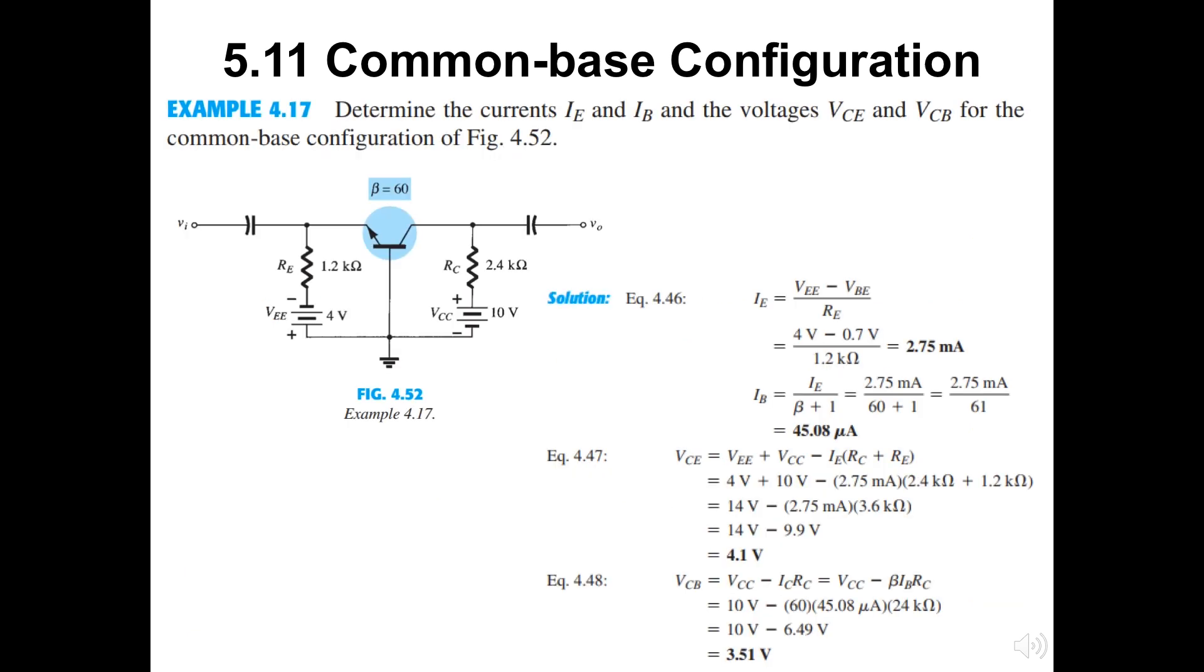For this equation, let us take a look at the example 4.17 here. IE and IB are calculated based on the previous slide equation. Then by applying the KVL, the left-hand side loop and the outer loop, VCE and VCB could be obtained.